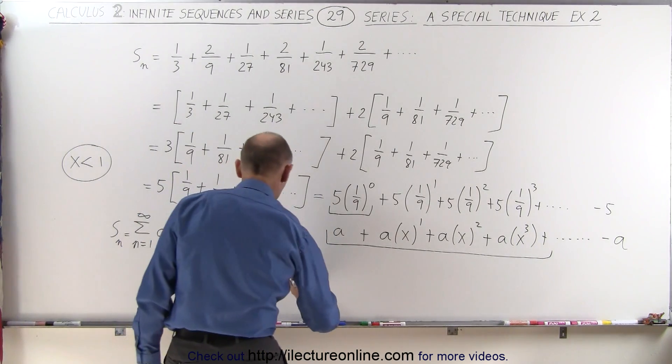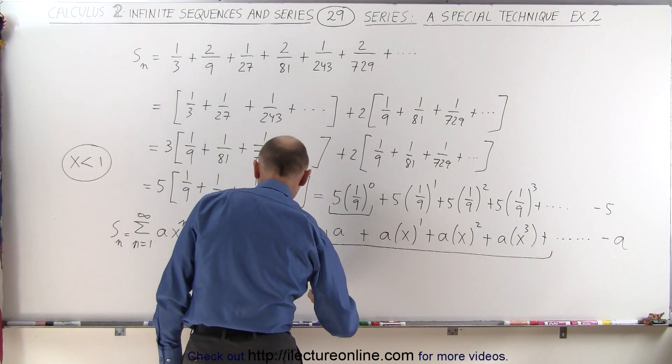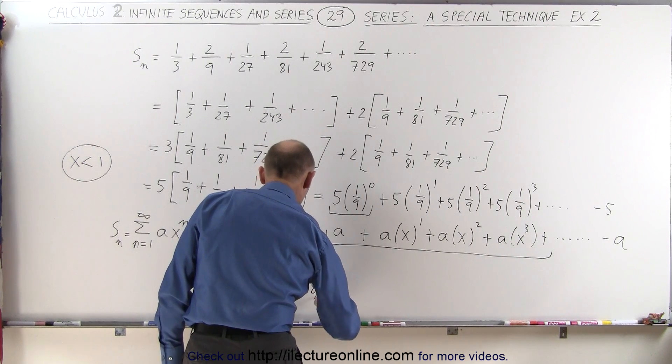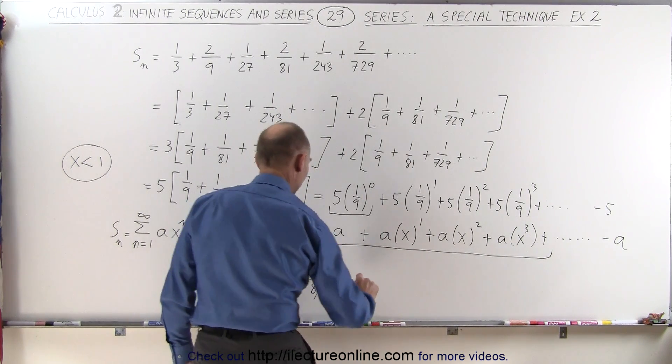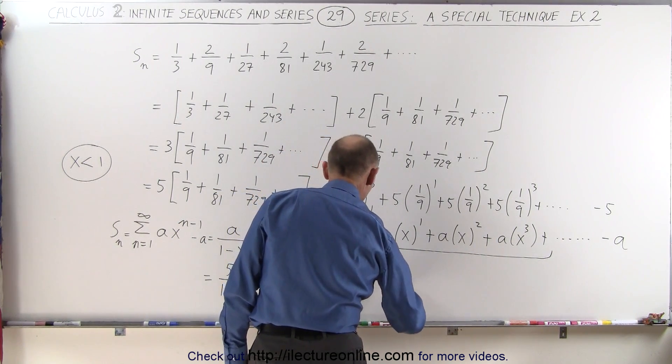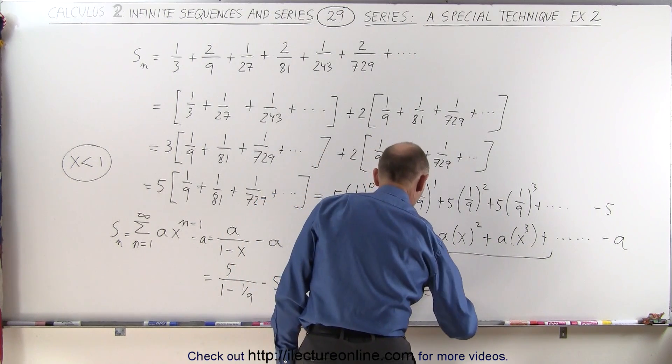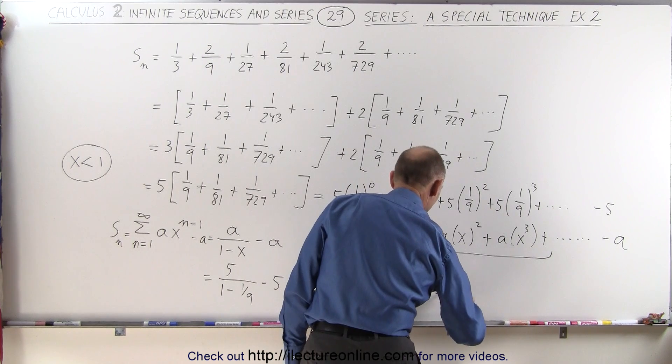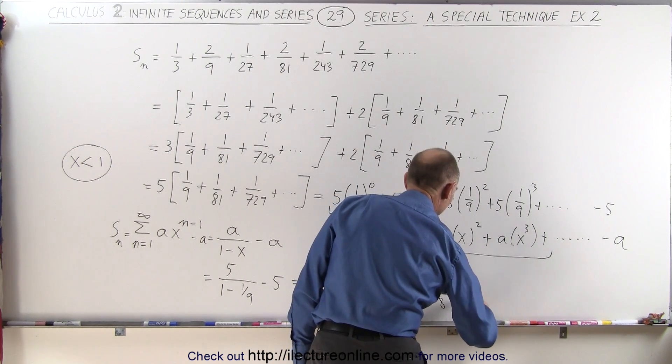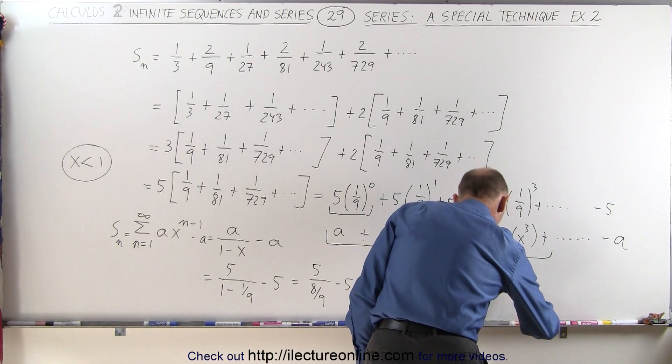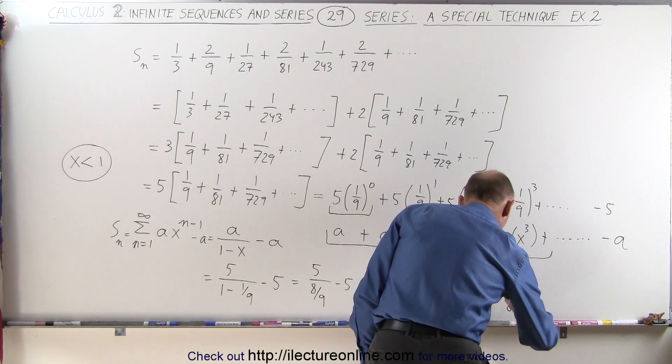Now this is equal to 5 divided by 8/9 minus 5, which is equal to 45/8 minus 5, which is 45/8 minus 40/8, which is equal to 5/8.